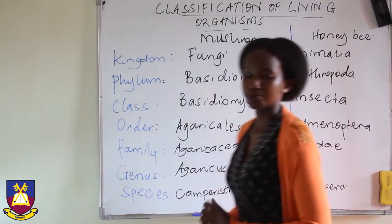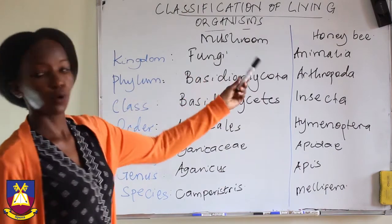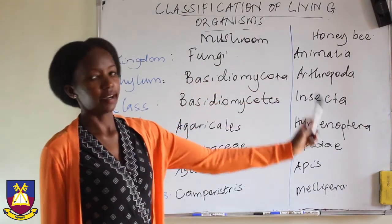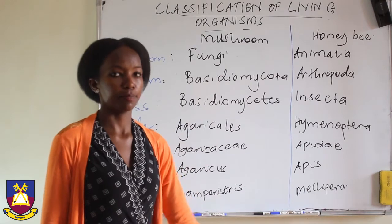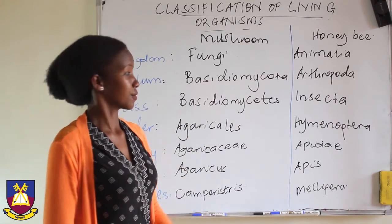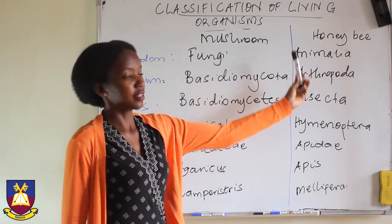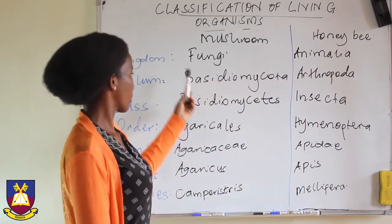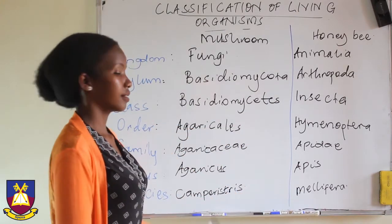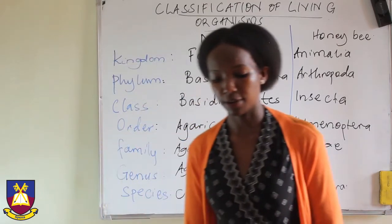Here is the list of two more organisms that we have classified: a mushroom and a honeybee. The mushroom is one of those edible ones — it is a fungus, and the honeybee is an animal. We have followed all the seven levels and placed them in all seven orders.